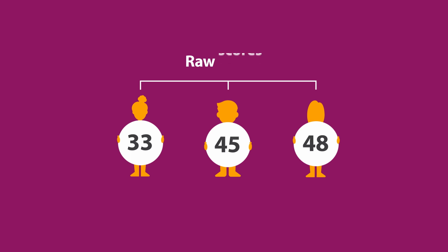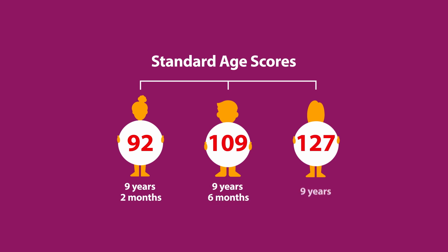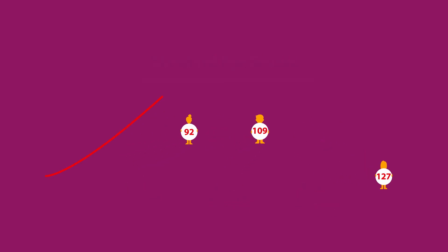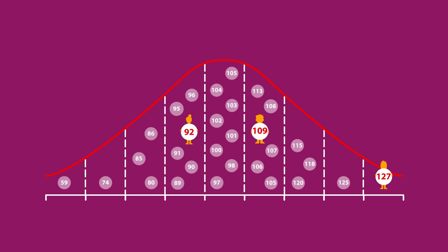This is then adjusted for age, in years and months, and mapped onto a graph that compares learners nationally. It gives us the most fair and consistent measure of performance.